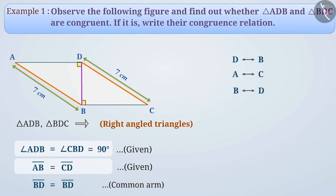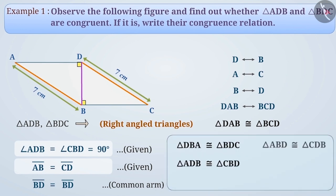In short, we can say that DAB corresponds to BCD. With the help of these, it can be said that triangle DAB is congruent to triangle BCD. Keeping in mind the relations, we can also show the congruency of these two triangles angles in the following way.